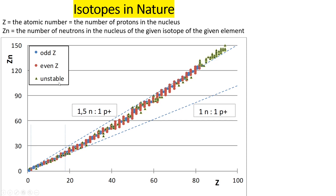We also use triangles to denote unstable isotopes — meaning isotopes that undergo radioactive decay. It is probably not surprising that we have many unstable isotopes for the radioactive elements. In this graph I am showing only the natural elements from atomic number 1 for hydrogen to atomic number 94 for plutonium.